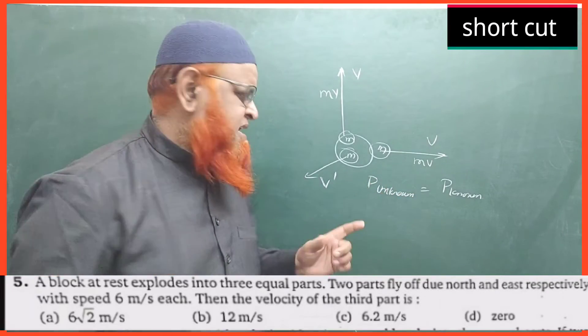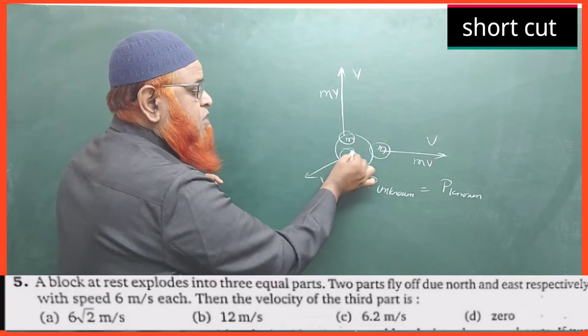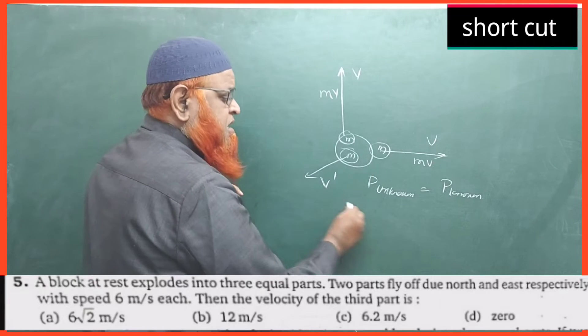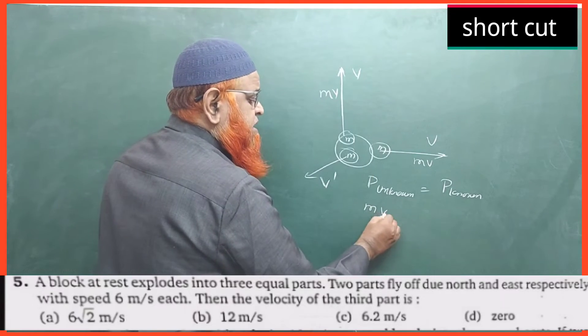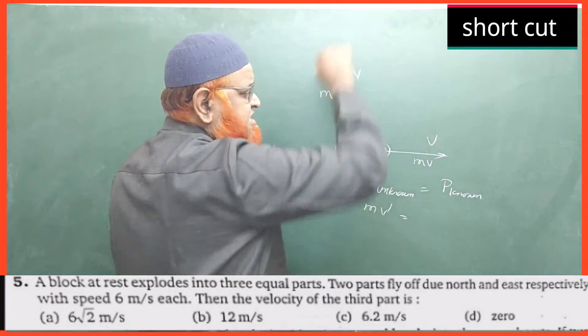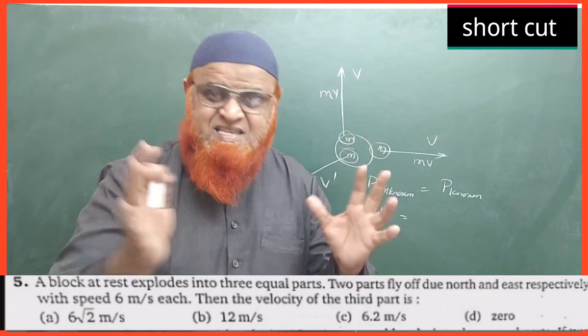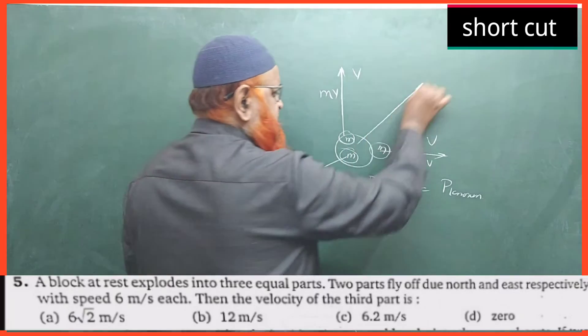Very simple. Momentum unknown is the momentum of this block which is coming here, so momentum is m into v dash. And here, momentum known is in this direction, in this direction. You all know that the momentum is the vector. You have to find out the resultant of these two.